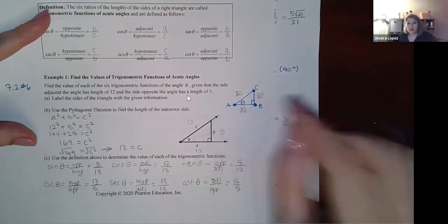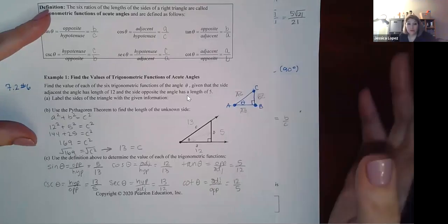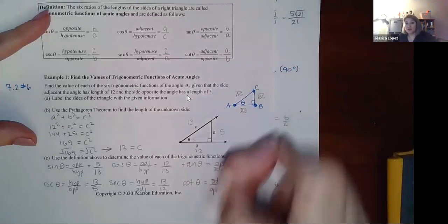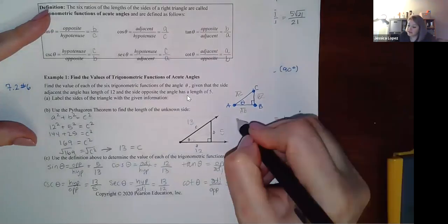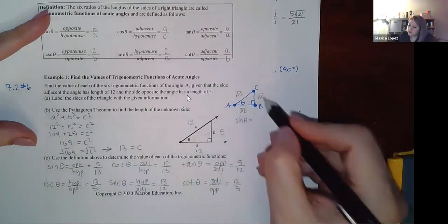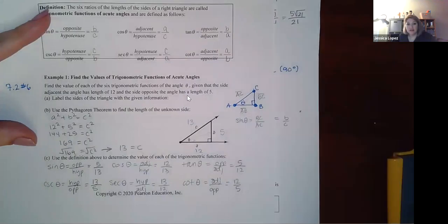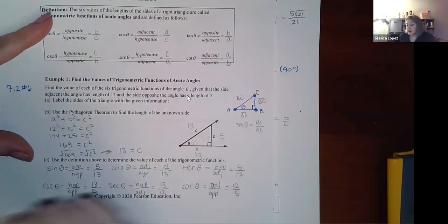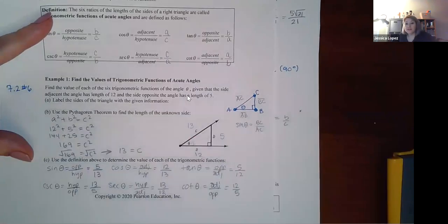People sometimes write the side length with a bar over the letters, sometimes without. For example, sine of theta would be BC (opposite) over AC (hypotenuse). This is necessary to know for homework number 6, where only vertices are given without labeled side lengths.